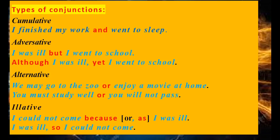Alternative: we may go to the zoo or enjoy a movie at home. Any one of the options — go to the zoo, one option; enjoy a movie, another option; choose any one. You must study well or you will not pass. Illative means a conclusion or inference is drawn. I could not come because I was ill. I was ill, so I could not come. Illative — one is a reason for the other.